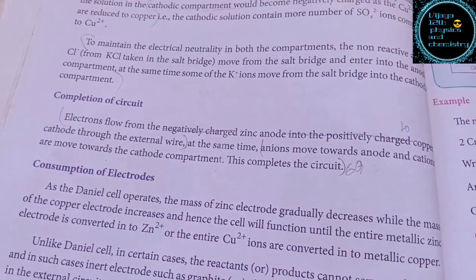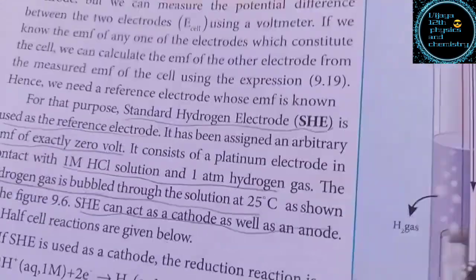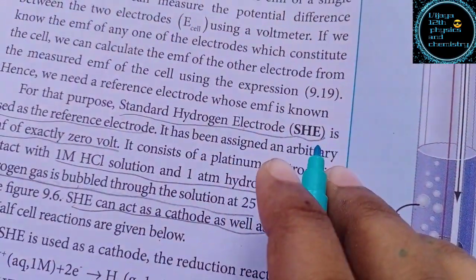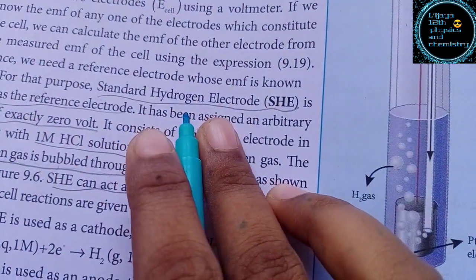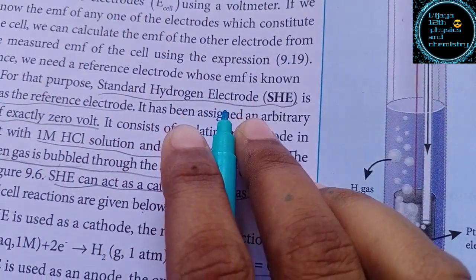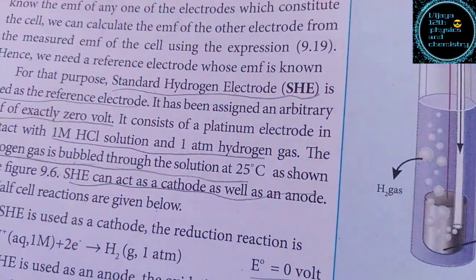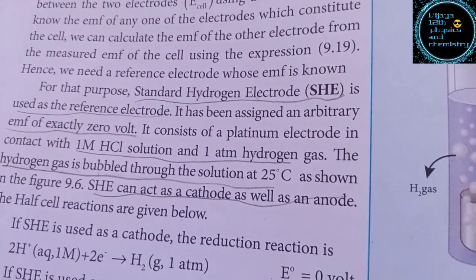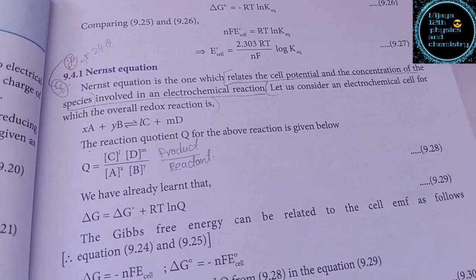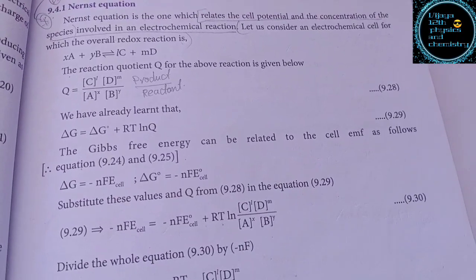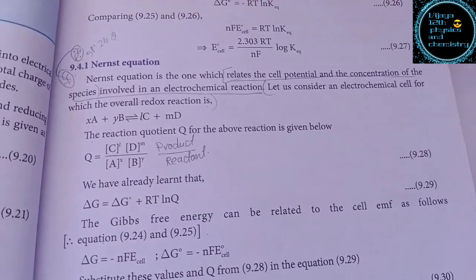Expand the sheet — standard hydrogen electrode. Nernst equations are also an important 5-mark topic.